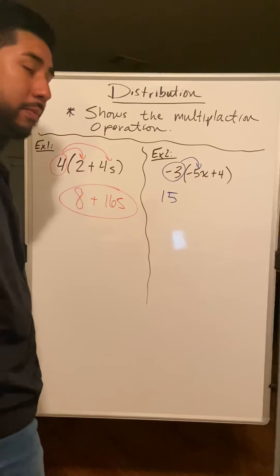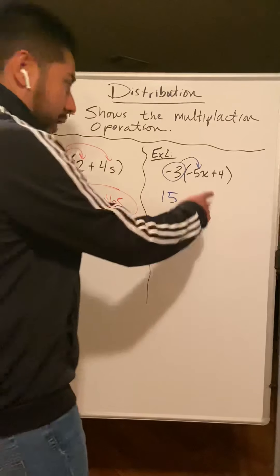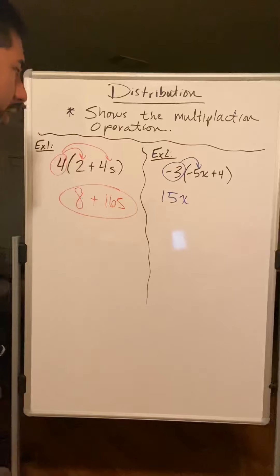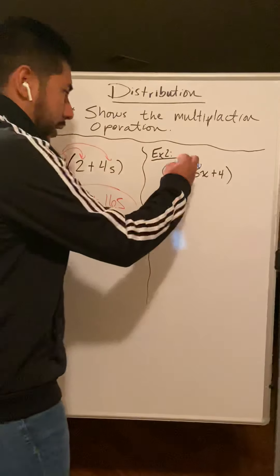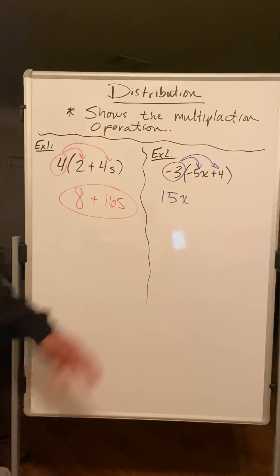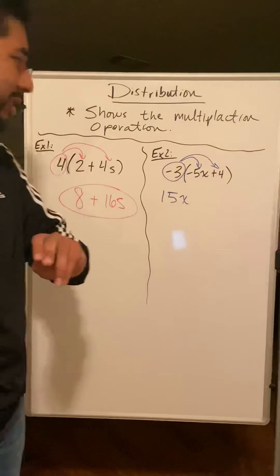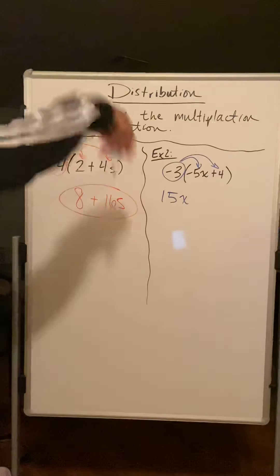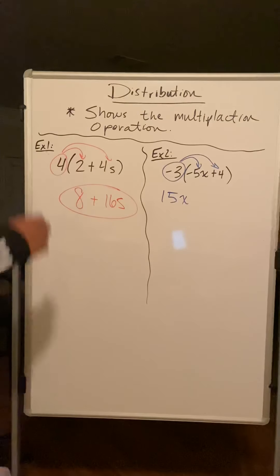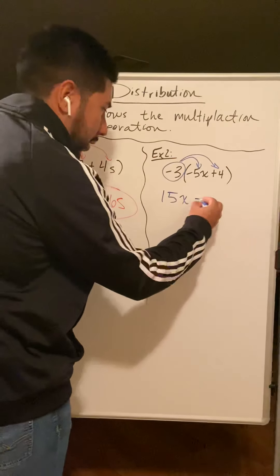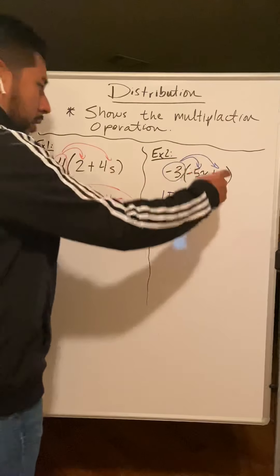I forget something? Yeah, I forgot the x. Don't forget to put the x right there, okay? We do our last part. Negative three times positive four. Negative times a positive - hopefully you know - negative times positive is a negative 12.